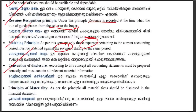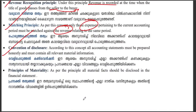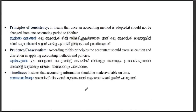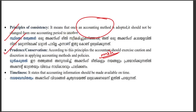For the Convention of Disclosure, all material accounting information must be disclosed completely. Materiality means anything significant must be disclosed. Consistency means once we adopt an accounting method, we do not change it every year. Prudence means we anticipate losses and create provisions for them in advance. Timeliness means accounting information must be made available on time.